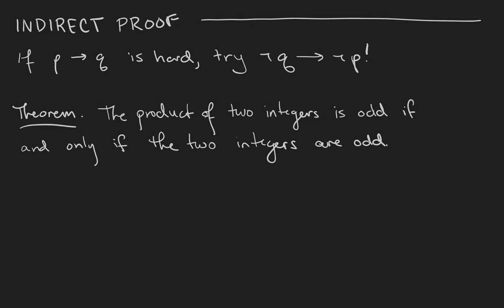In the last couple videos we did direct proofs of statements of the form if p then q. But sometimes it's hard to prove that directly. We learned in our logic videos that the statement if p then q is equivalent to its contrapositive: if not q then not p. So sometimes you can trade a hard problem for an easy one.